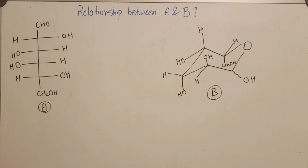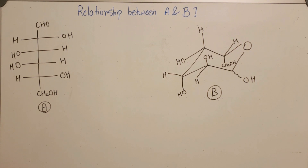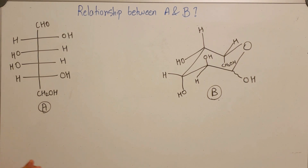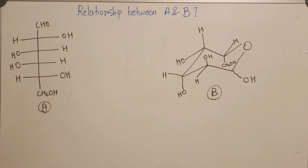Another type of question you can be asked is: what is the relationship between A and B? One of them is the Fischer form and the other is the cyclic form. You cannot directly compare the two and say they are enantiomers, diastereomers, epimers, or anomers. You have two options: convert A into the cyclic form and compare, or convert B into the Fischer form. I prefer converting the cyclic form into the Fischer projection.